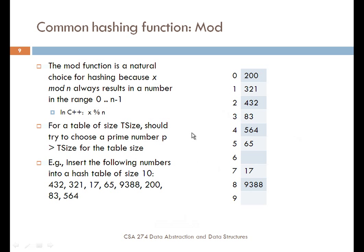In the case of a string key, we would have to convert it into some kind of number and then apply the mod operation in order to store it in some location. For instance, if we had a string and converted it by adding all of the characters into a number, we could use the mod operation to determine where to store it. The idea is to take some key, convert it into a number, apply a hash function, and use that to determine where it's stored in the array.